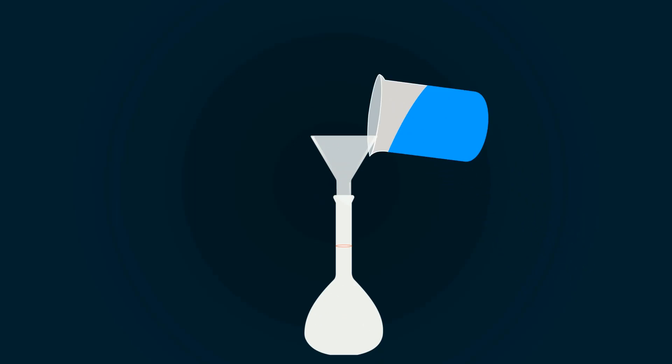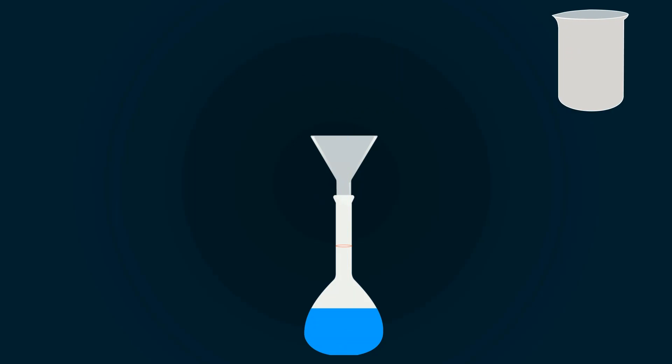Add the solution into the volumetric flask of 1000 ml with the help of funnel. Add more distilled water to get up to the 1000 ml point.